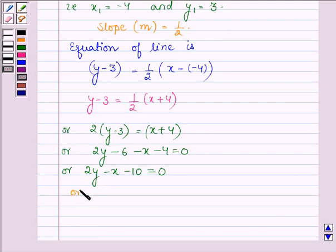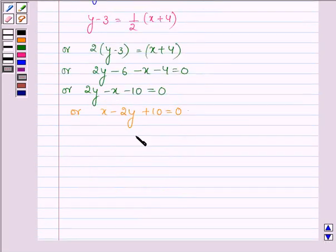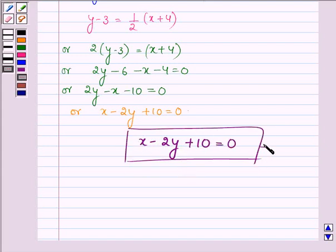Now multiplying both sides by negative sign we have x minus 2y plus 10 equals 0. Therefore, the equation of the line passing through the point (-4, 3) with slope 1/2 is x minus 2y plus 10 equals 0. So this is our answer. Hope you understood it, take care and have a good day.